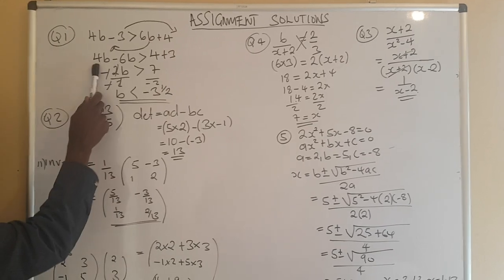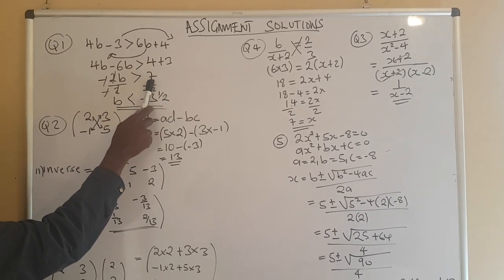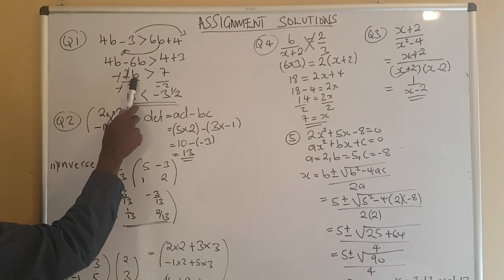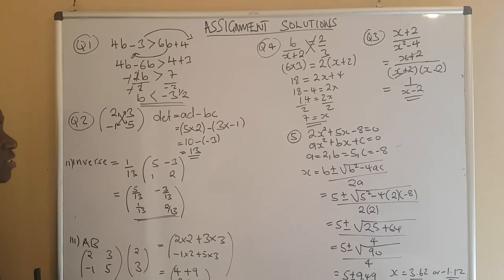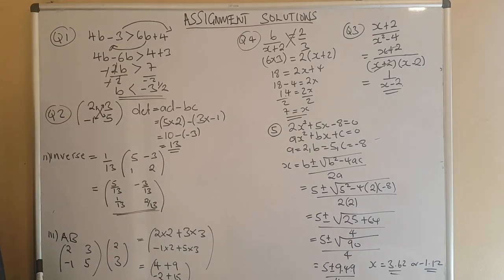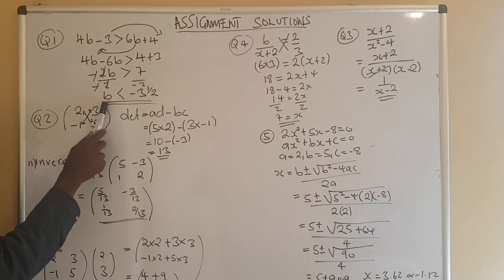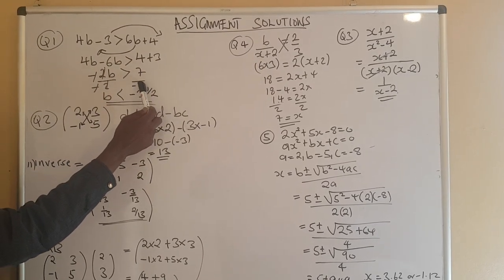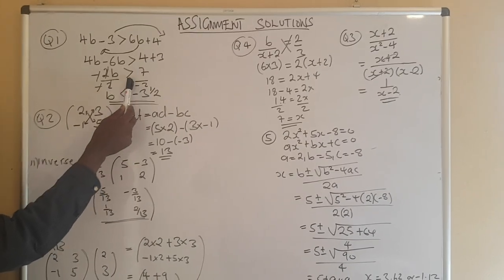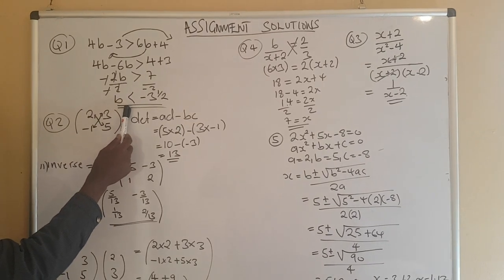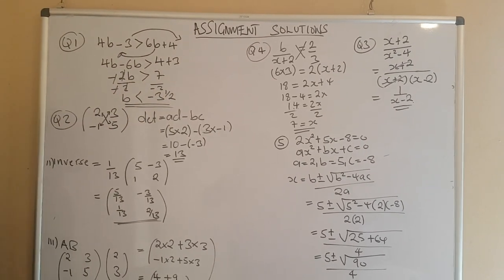At this stage we do our computation. 4b minus 6b gives us negative 2b. On the other side, 4 plus 3 gives us 7. Our intention is to isolate b, so we divide both sides by negative 2. The rule of inequality is that when we divide by a negative, the sign must change. So negative 2 divided by negative 2 gives positive 1, and positive 7 divided by negative 2 gives negative 3 and a half. Therefore b is less than negative 3 and a half.